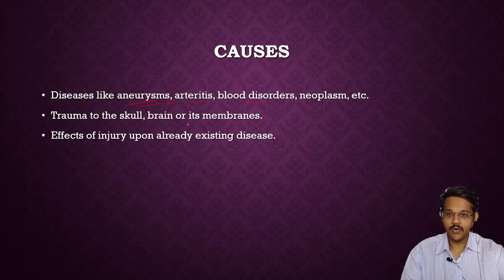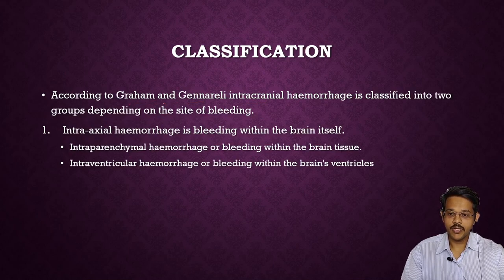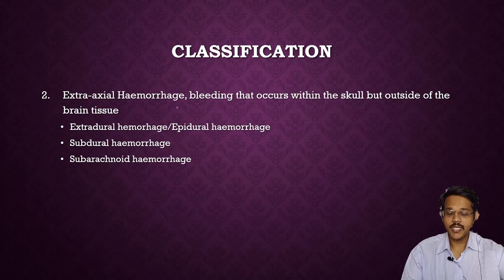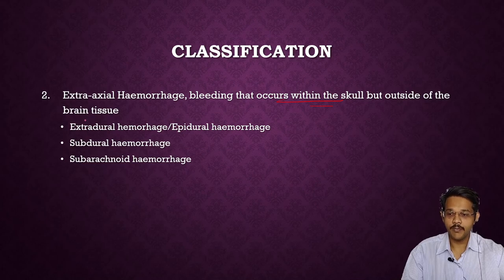Trauma to the skull, brain, or its membranes, and effects of injury upon already existing diseases, can also lead to intracranial hemorrhages. Generally, intracranial hemorrhages are divided into two types: intra-axial hemorrhages, where bleeding occurs within the brain itself (including intracerebral and intraventricular hemorrhages), and extra-axial hemorrhages, where bleeding occurs within the skull but outside the brain tissue, including extradural, subdural, and subarachnoid hemorrhage.